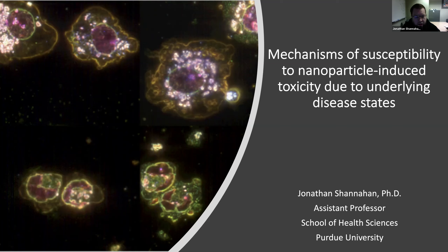You can see here macrophages and neutrophils from the lungs of mice that have been exposed to nanoparticles, and you can see the internalization of nanoparticles actually within these cells. This was produced utilizing the hyperspectral dark-field microscope. You can actually see the nanoparticles both inside the macrophages and the neutrophils that have been recruited to the lung following the exposure.